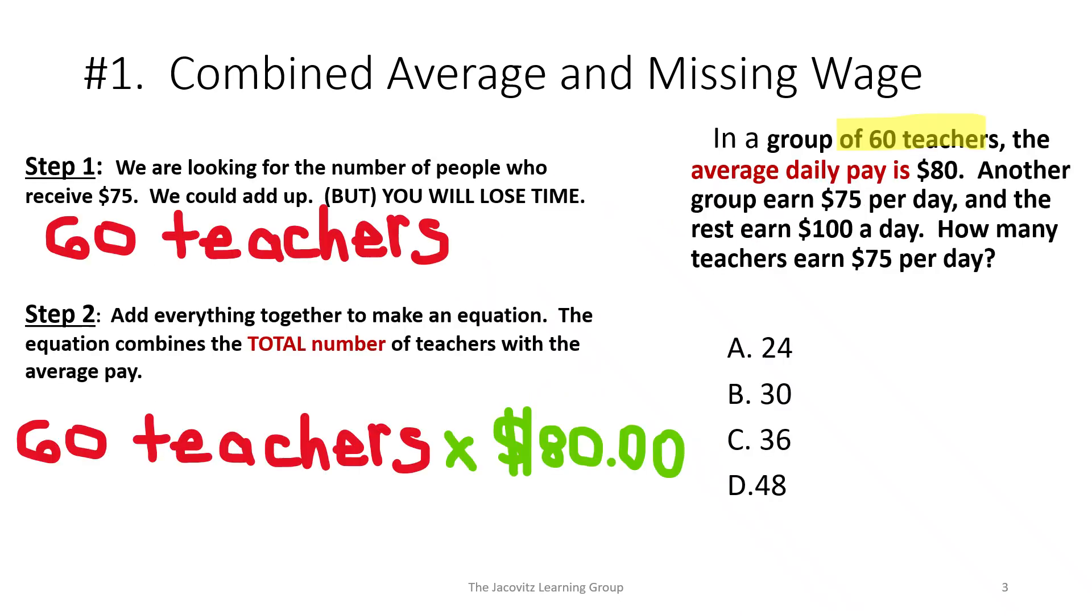So when we move on, we take the information that was given us. A group of 60 teachers, the average daily pay is $80. The average is right in front of you, and there are 60 of them. So you get ready to multiply 60 teachers times $80.